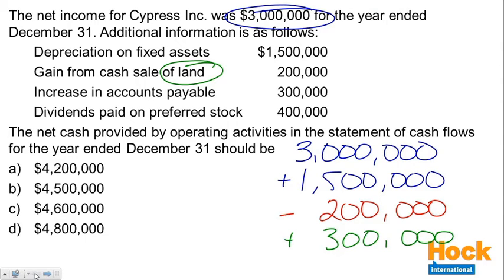The last item is dividends paid on preferred stock. Dividends paid are not an operating activity — they are a financing activity. In addition, dividends paid aren't included in net income; they're an adjustment made after net income is calculated. So it's a financing activity and that $400,000 isn't included in net income anyway.